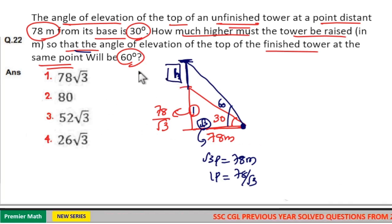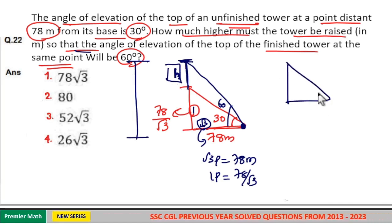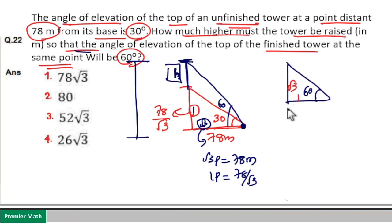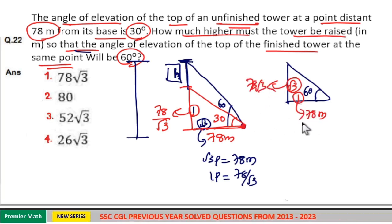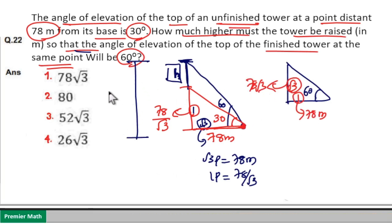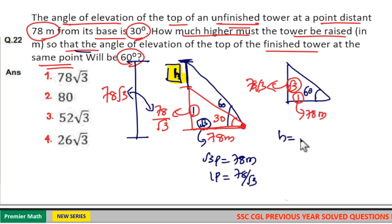Taking 60 degrees as the angle of elevation: tan 60 equals √3/1, which means 1 part is 78 meters (the base length). So the √3 part — the total height of the finished tower — is equal to 78√3.